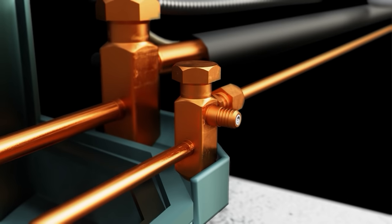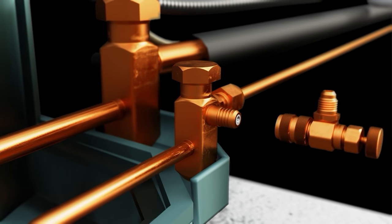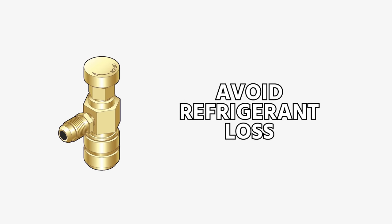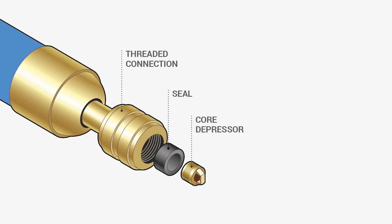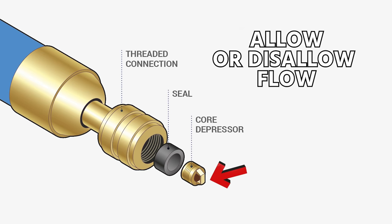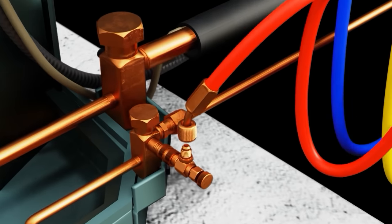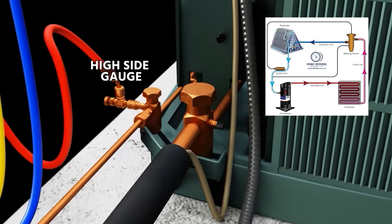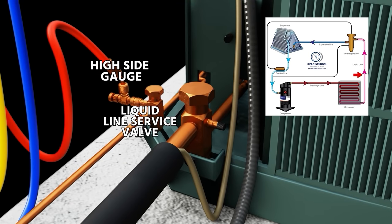Now, the way that I'm going to do this on the liquid line is I'm going to attach a core depressing tool, and that core depressing tool allows you to control the flow of refrigerant coming out of the valve, so that way you don't have a lot of refrigerant loss, and now you can depress or undepress the Schrader core in order to allow or disallow flow. So we're going to go ahead and put our red hose, which goes to our high side gauge, onto our liquid line service valve.